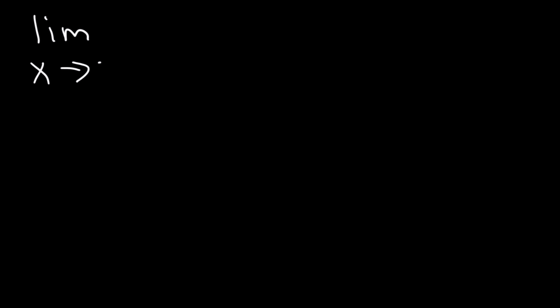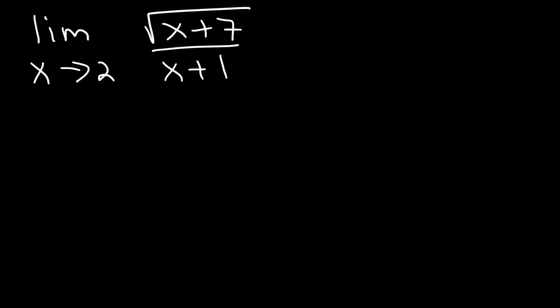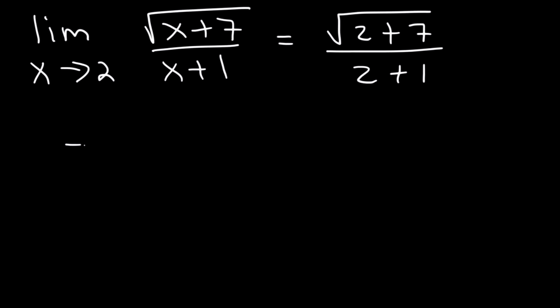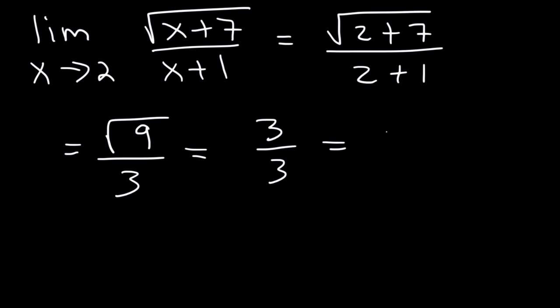What is the limit as x approaches 2 of the square root of x plus 7 divided by x plus 1? Use direct substitution: the square root of 2 plus 7 divided by 2 plus 1. 2 plus 7 is 9, and 2 plus 1 is 3. The square root of 9 is 3, and 3 divided by 3 is 1. So that's the answer.